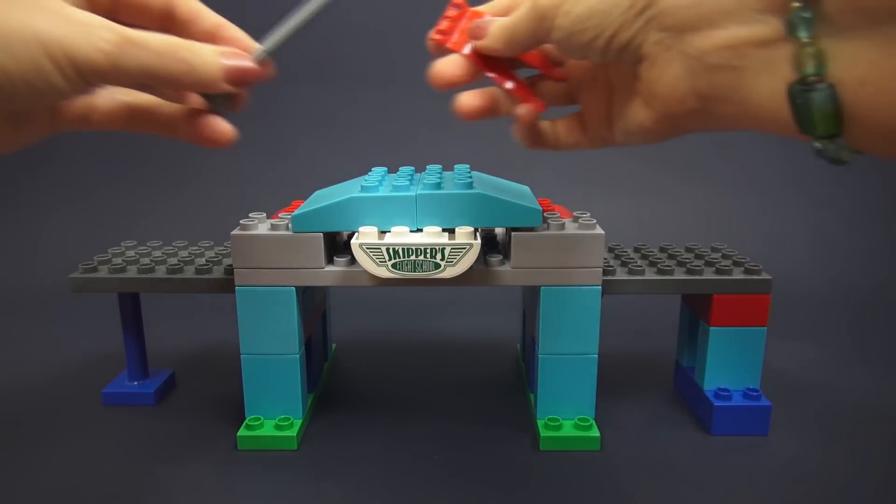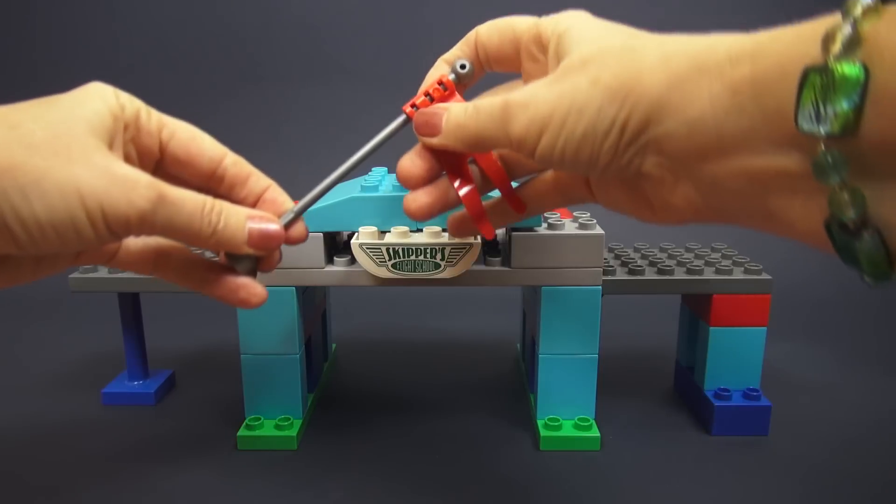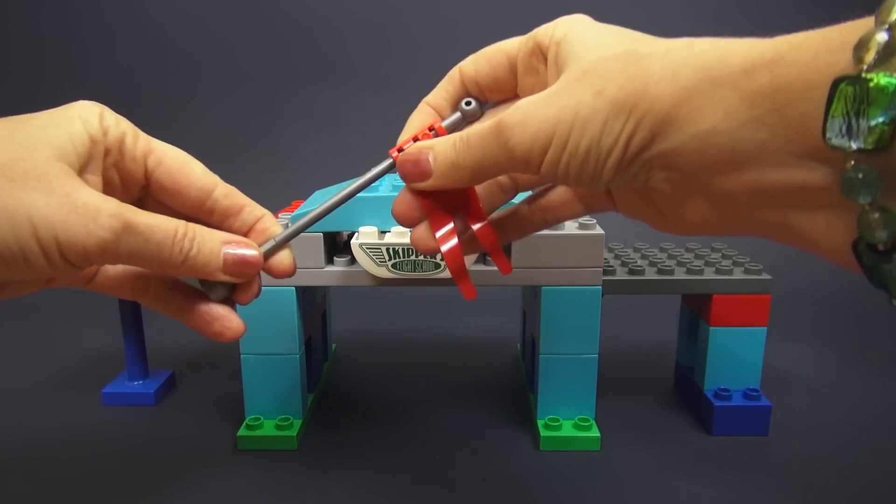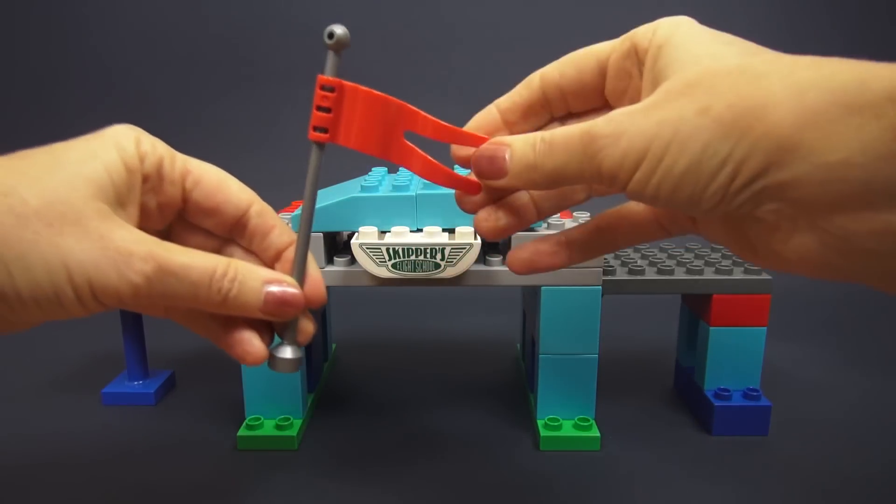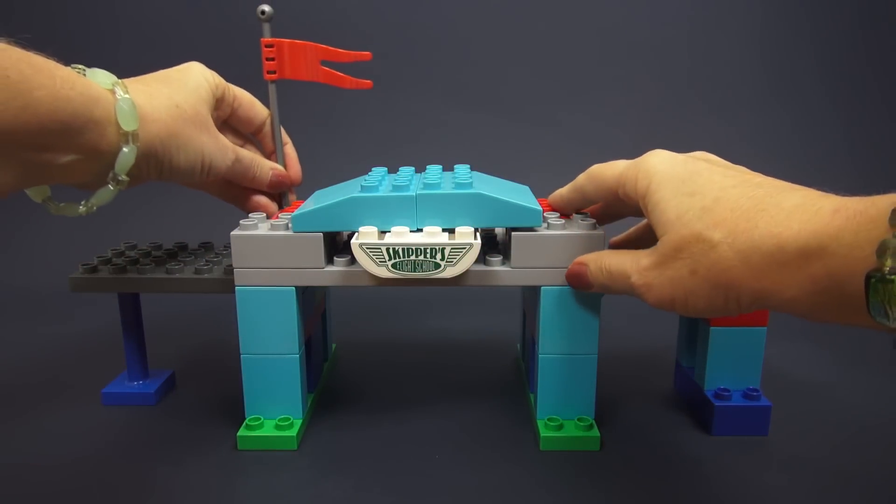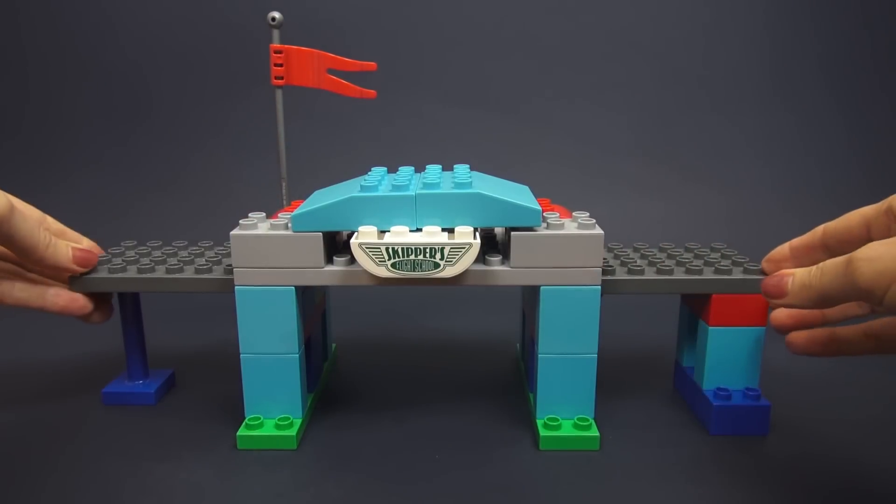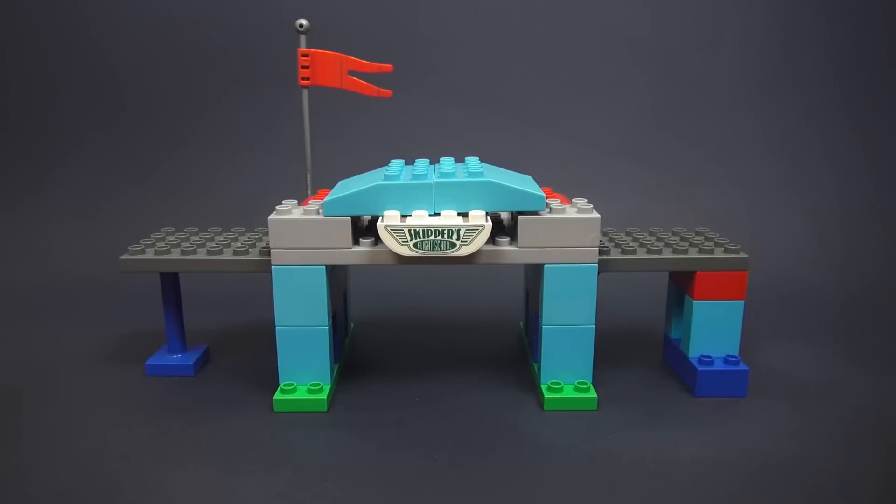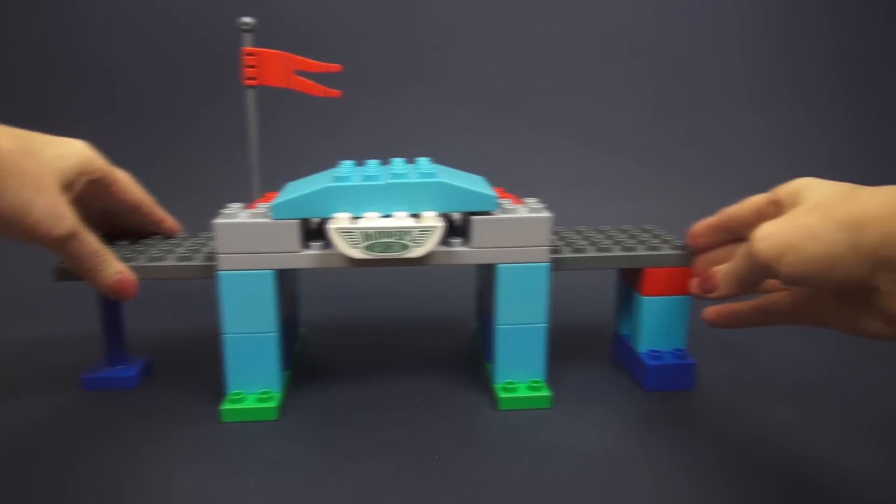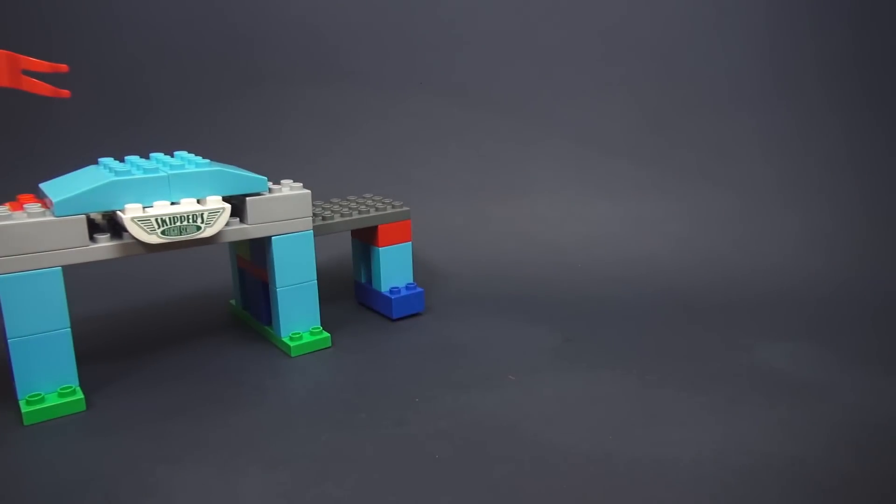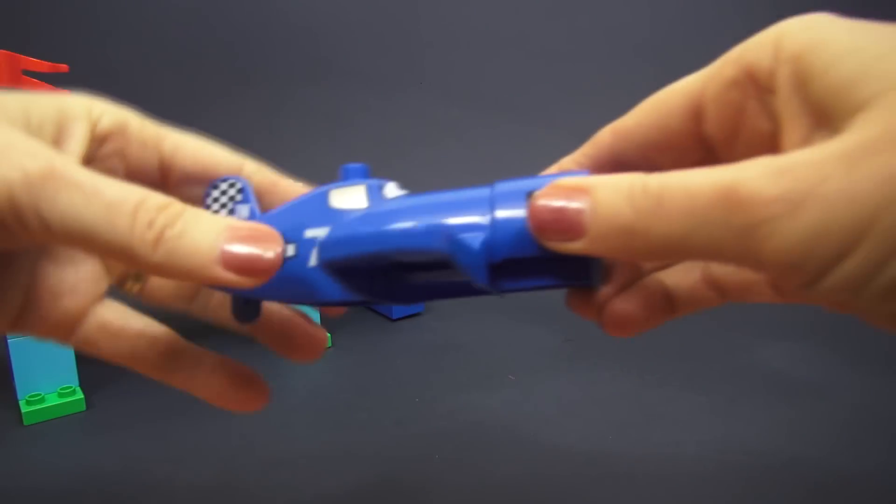And finally let's add the flag for the top of the hangar. The flag will show which way the wind is blowing for the flight school. So there you have the hangar, now let's meet our planes.